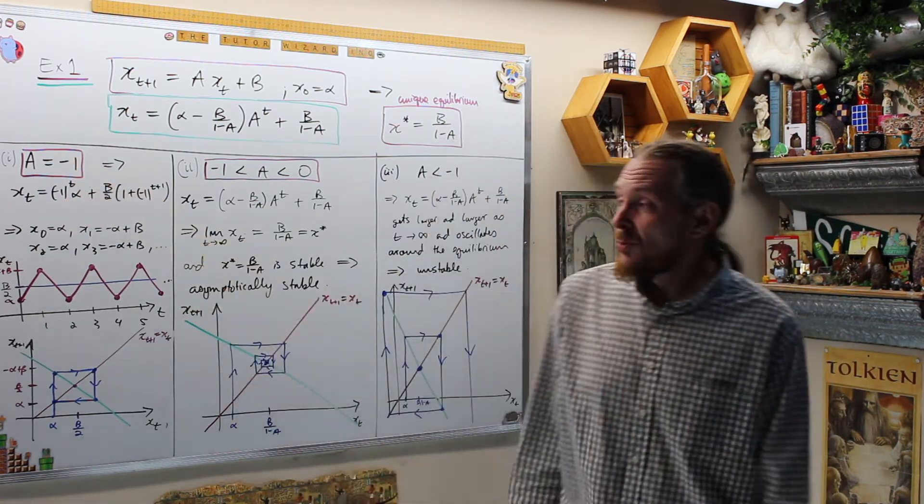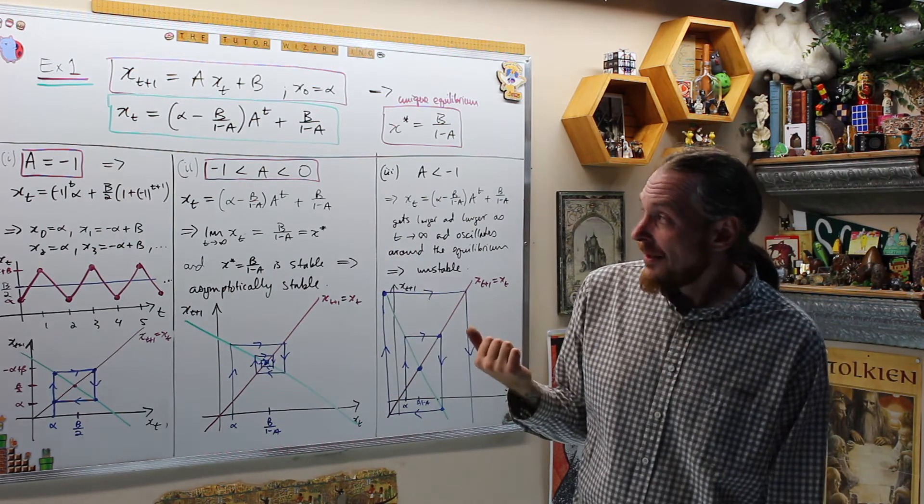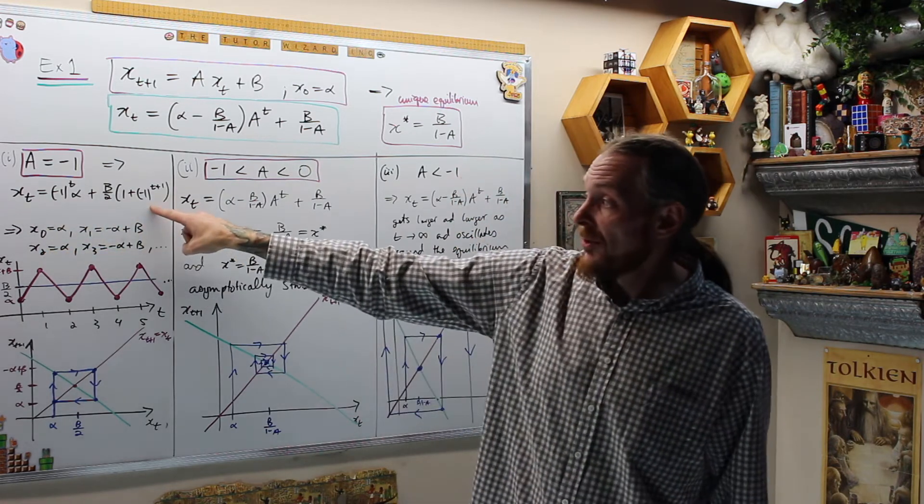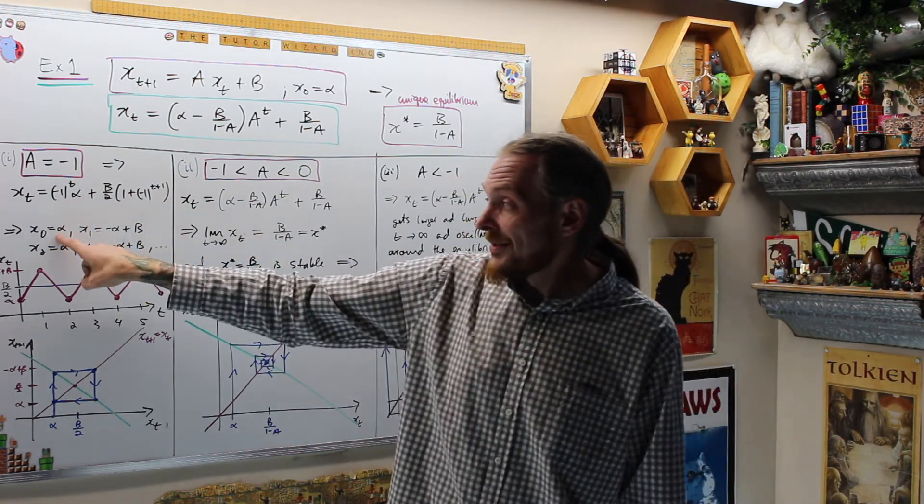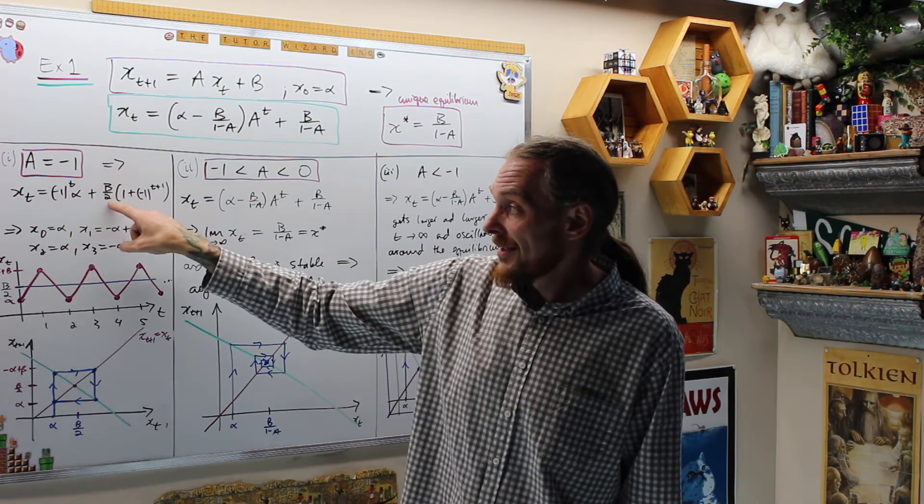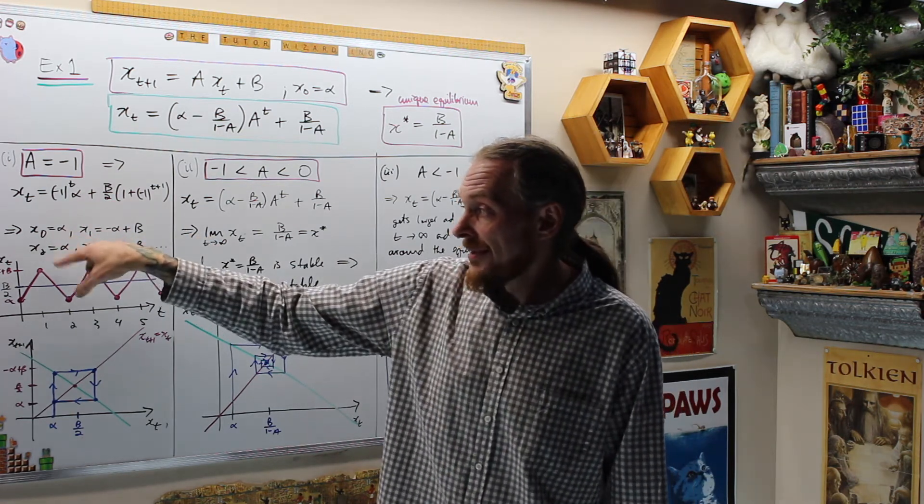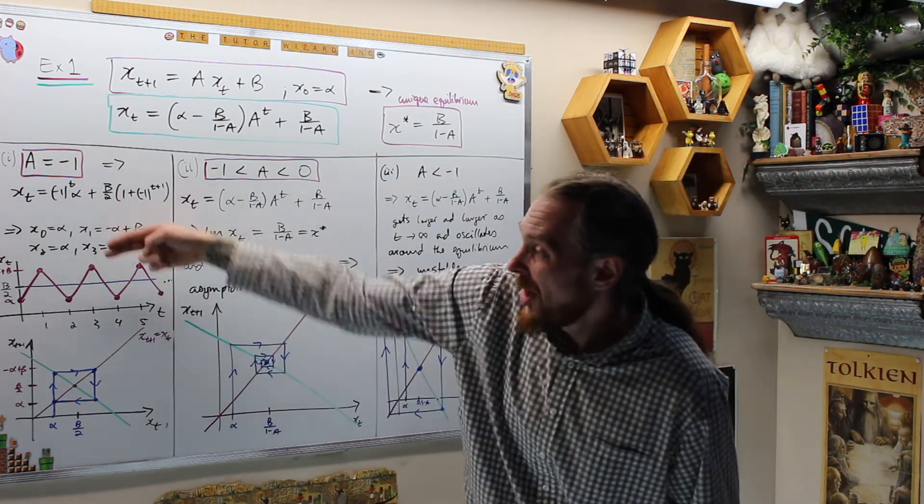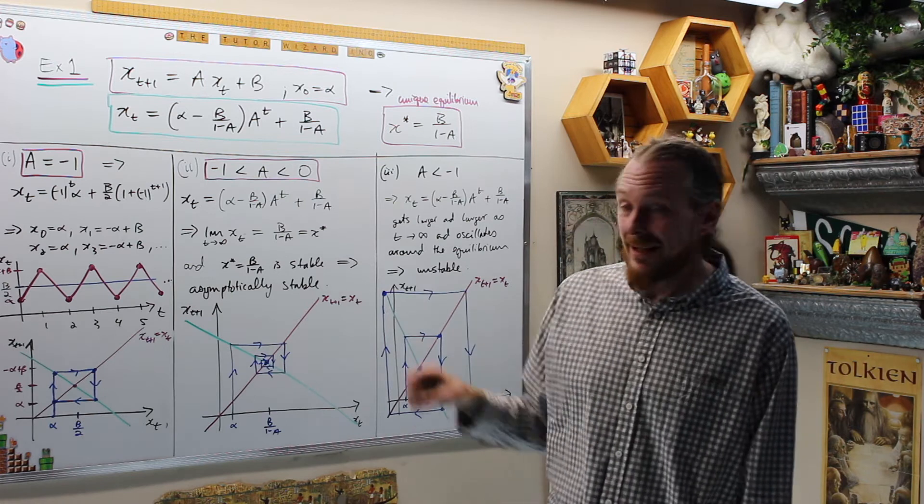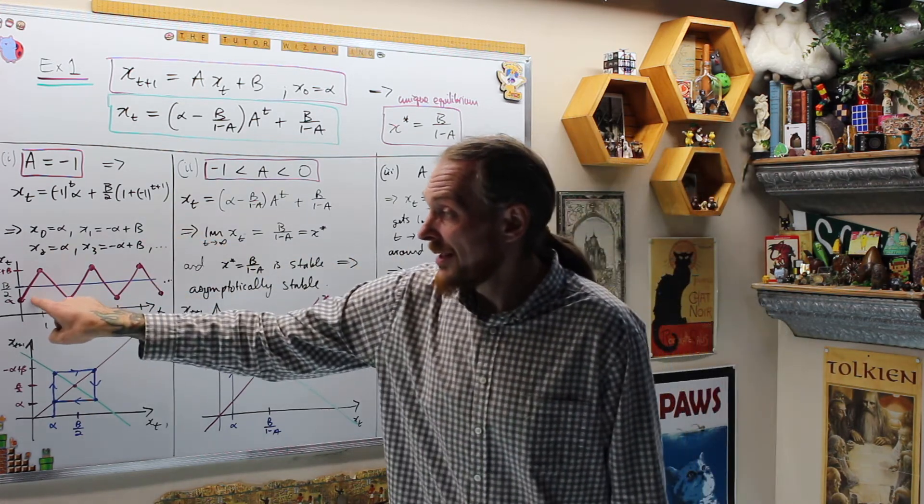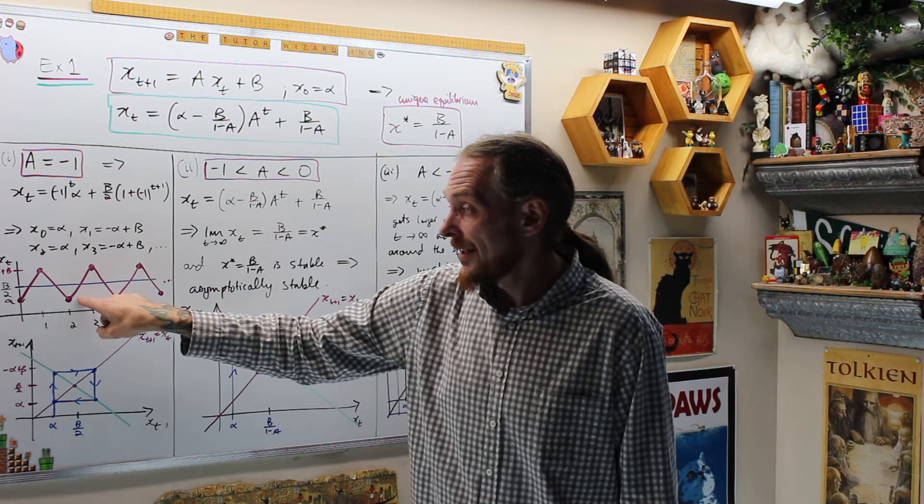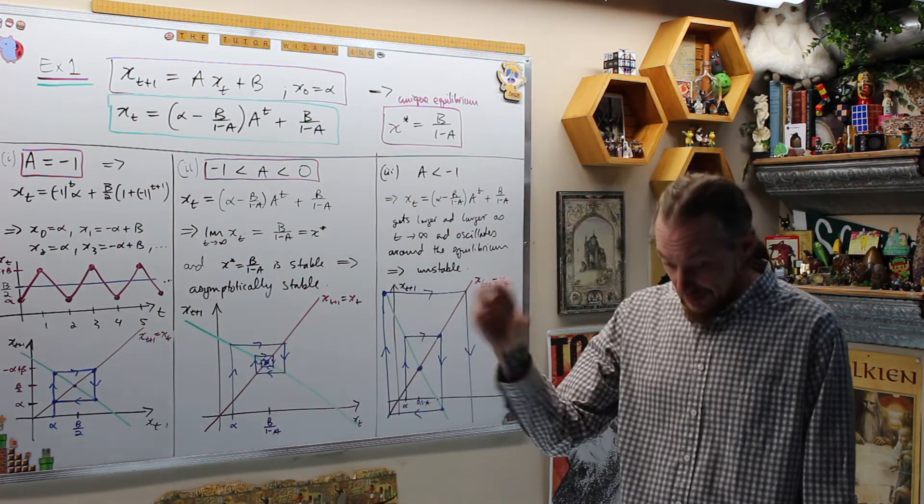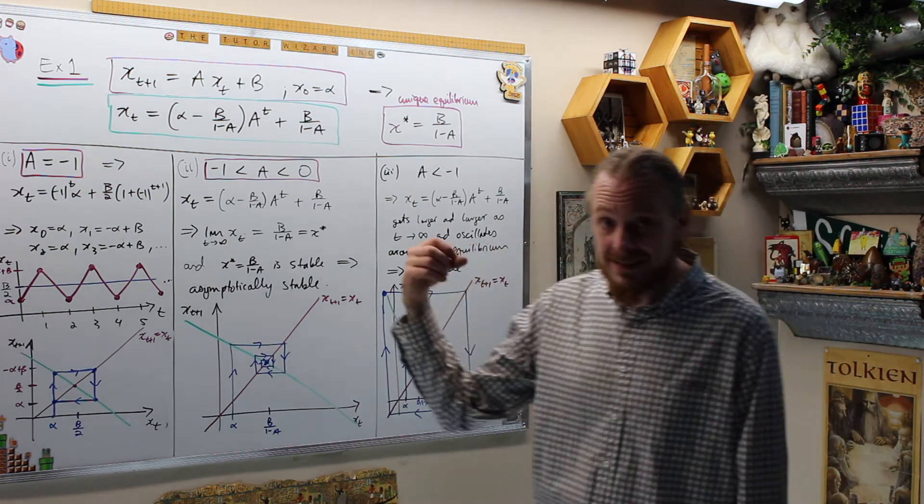If we look, first of all, in case one, as A equals negative one, then I can put that into here, because I have the closed-form, and I explicitly get a closed-form solution like this. And I notice that when I start calculating values, because I have the explicit closed-form, I see that if the timestamp is even, then I just get the initial condition alpha. If the timestamp is odd, then I get negative alpha plus beta. But the point being is, all it's doing is oscillating between two values, alpha and negative alpha plus beta.